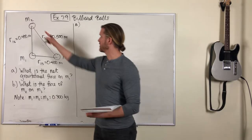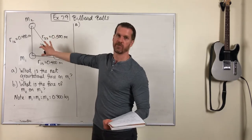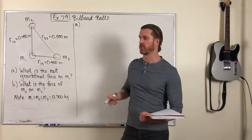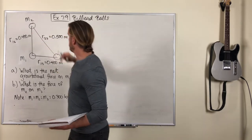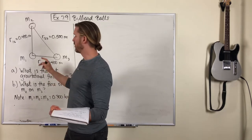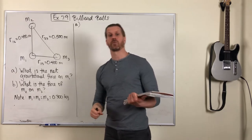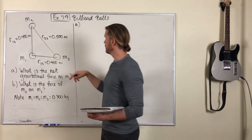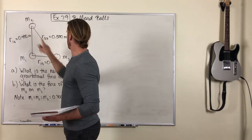So we've got three billiard balls sitting on a table. This is a top view, so this is all happening in the horizontal plane. And they are at the vertices of a 3, 4, 5 right triangle. All three billiard balls have the same mass of 0.3 kilograms. And we've labeled them 1, 2, 3.